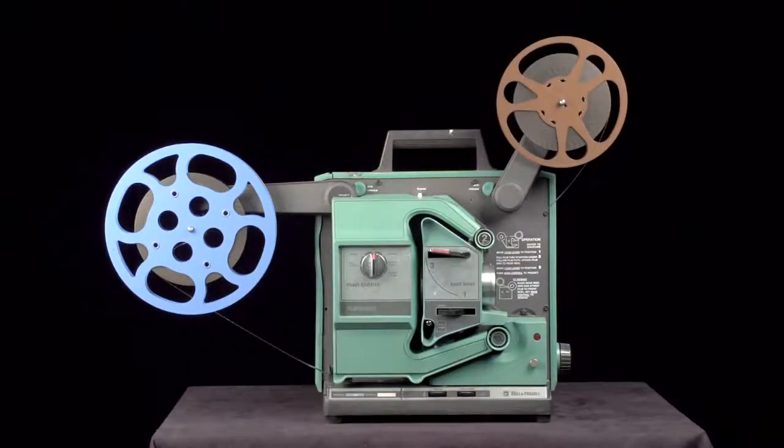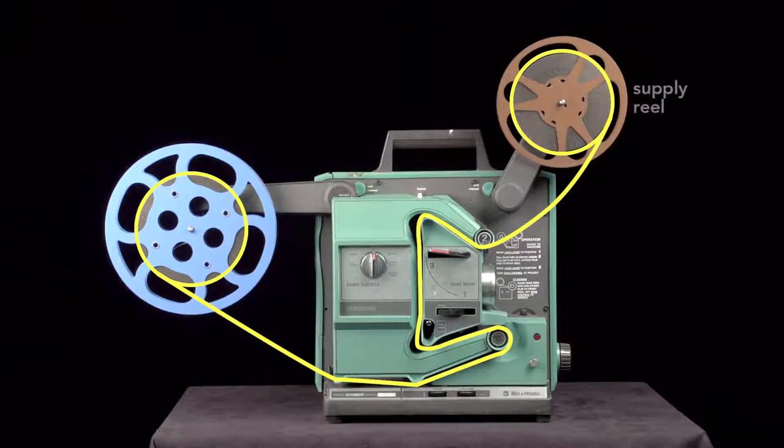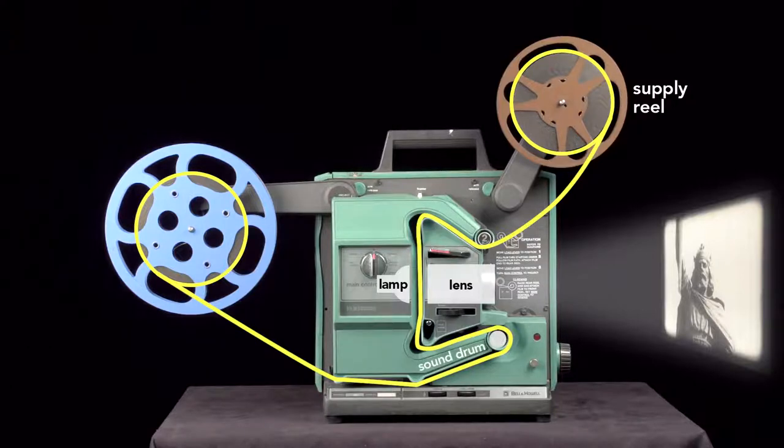To create the illusion of movement, a series of still images, the film, is pulled off the supply reel, threaded in between the lamp and lens so the image can be projected, then run across the sound drum, and finally coiled onto the take-up reel.